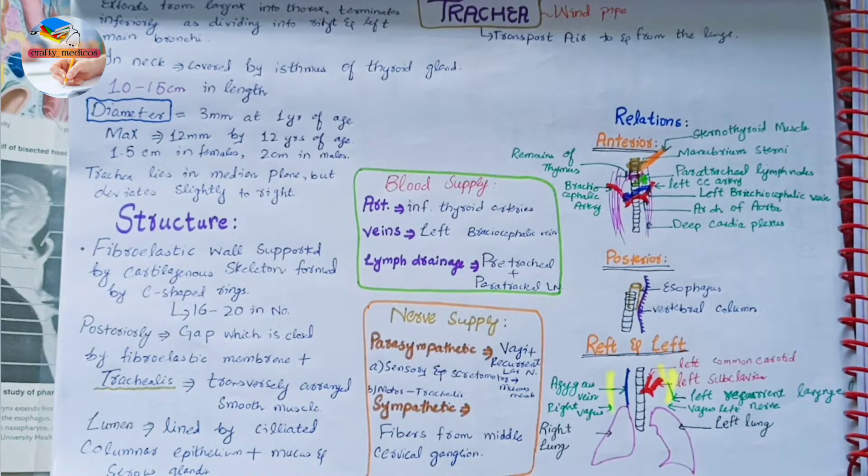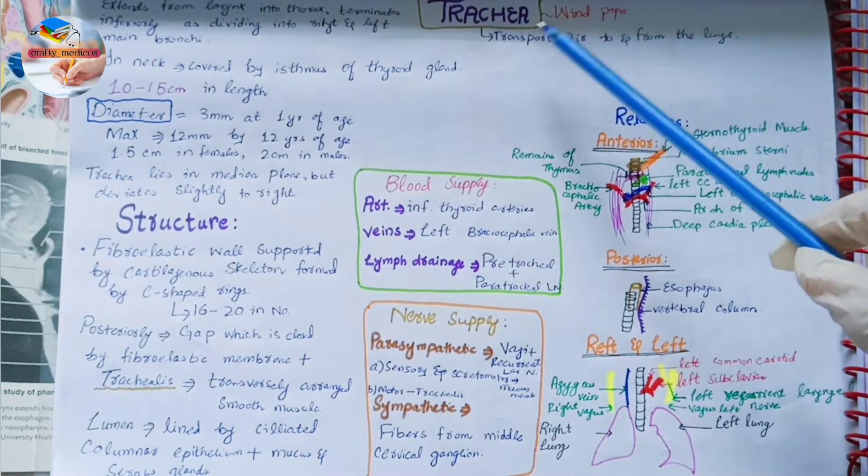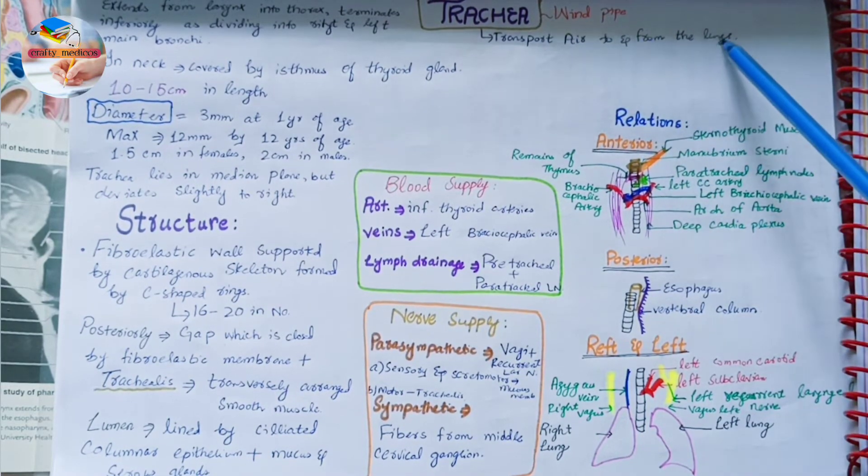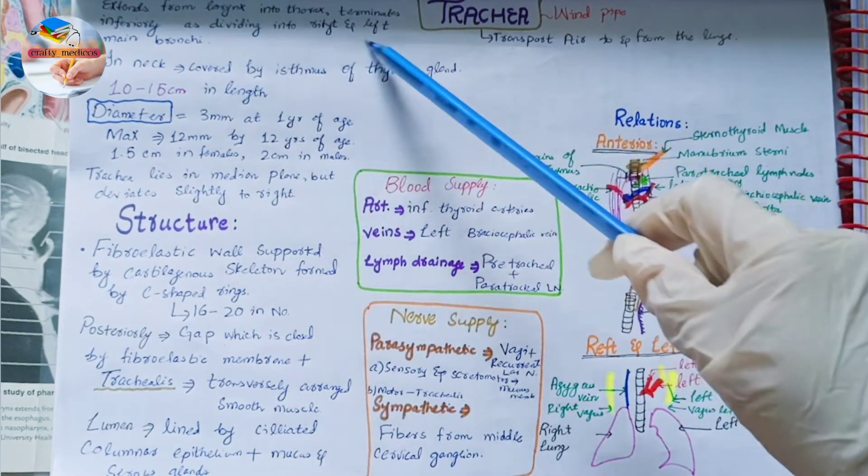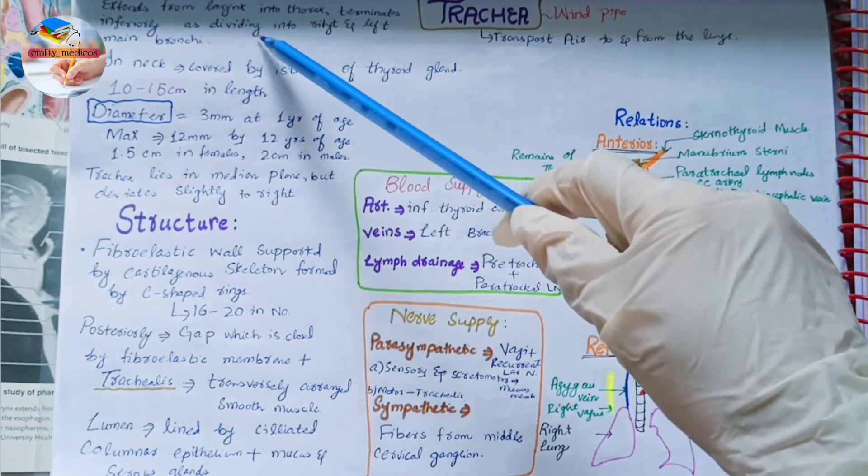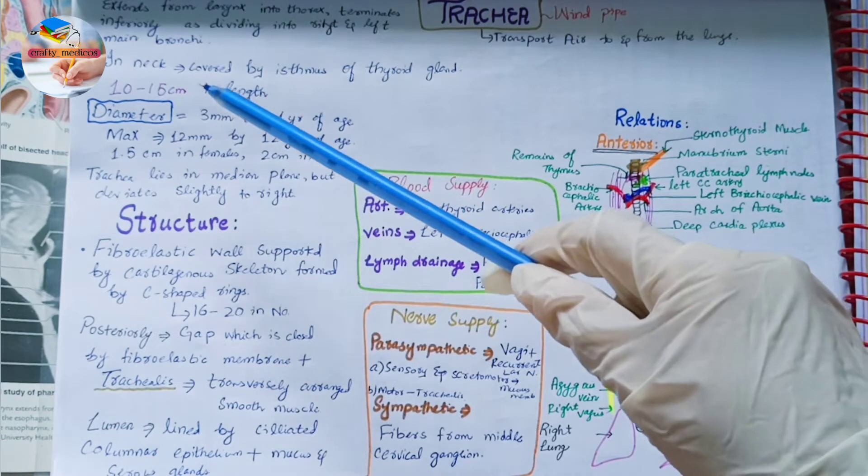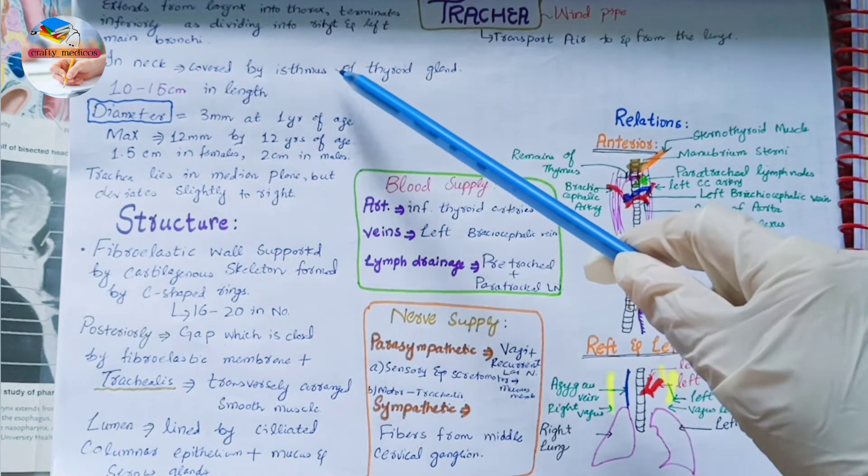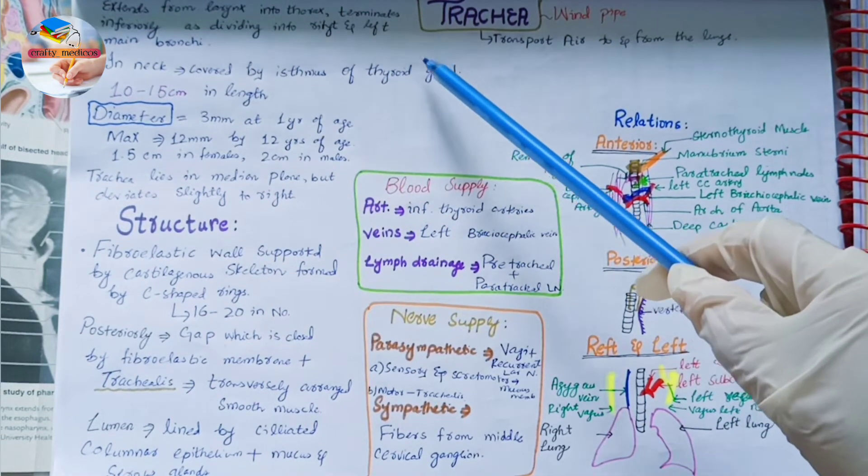Today we are going to discuss about the anatomy of trachea. Trachea is also called a windpipe and it transports the air to and from the lungs. It extends from larynx into thorax and terminates inferiorly dividing into right and left main bronchi.